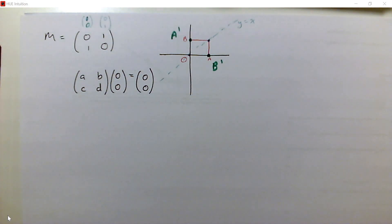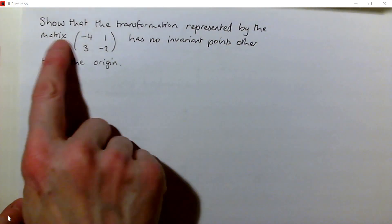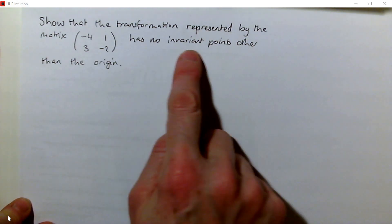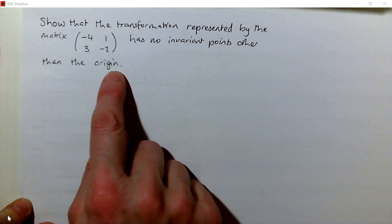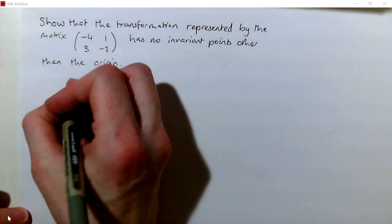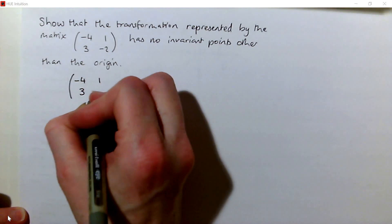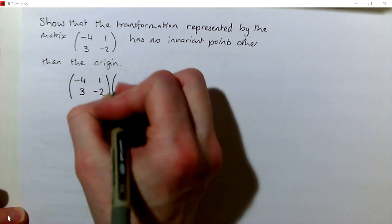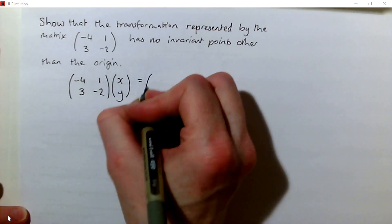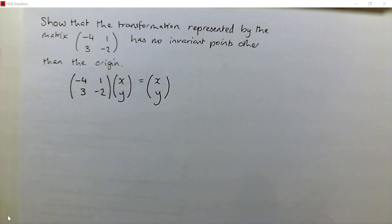Let's try a couple of examples. This one — we're going to show that the transformation represented by this matrix has no invariant points other than the origin. For any invariant points, we require that when we pre-multiply by our transformation matrix, a point x, y will end up back on the point x, y, so it hasn't moved anywhere.